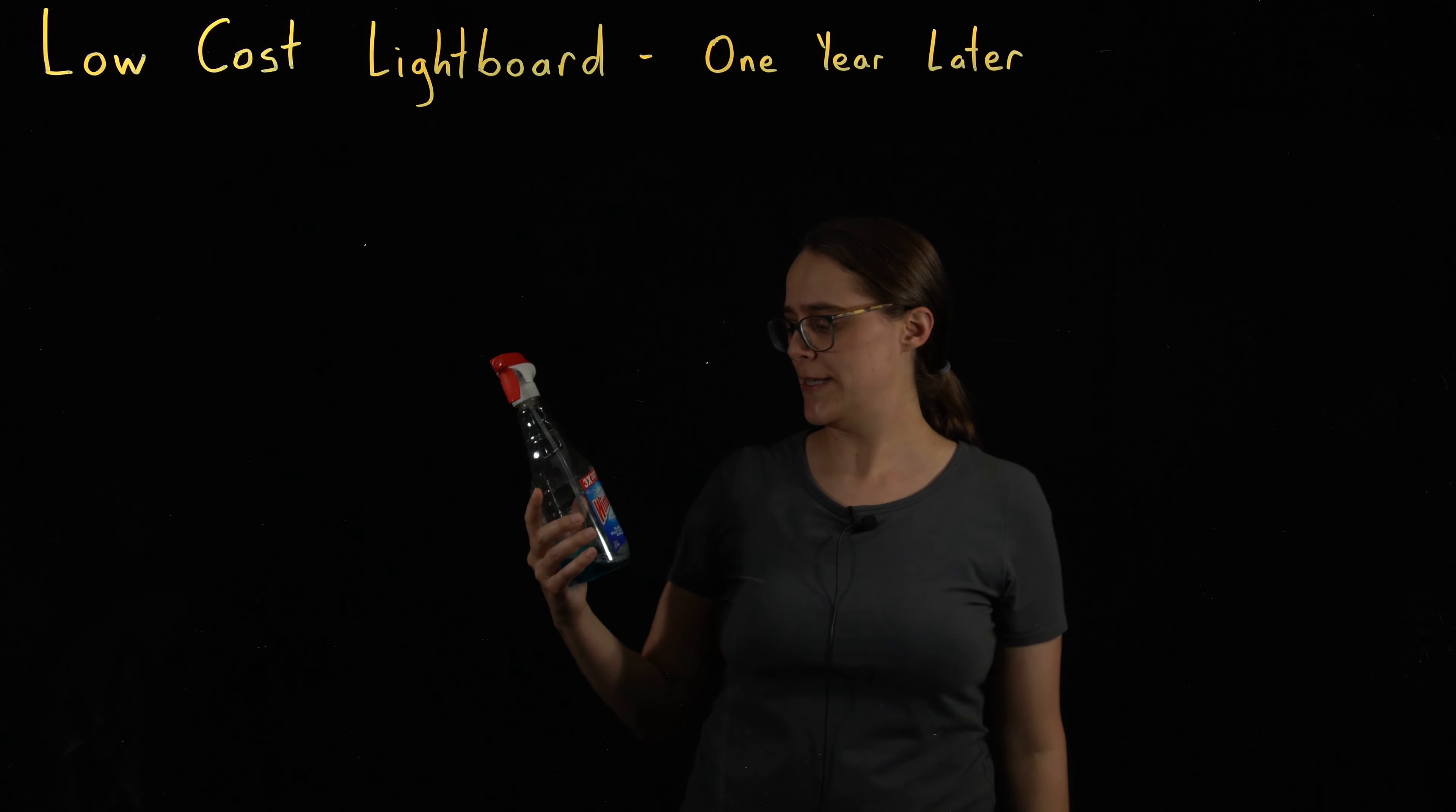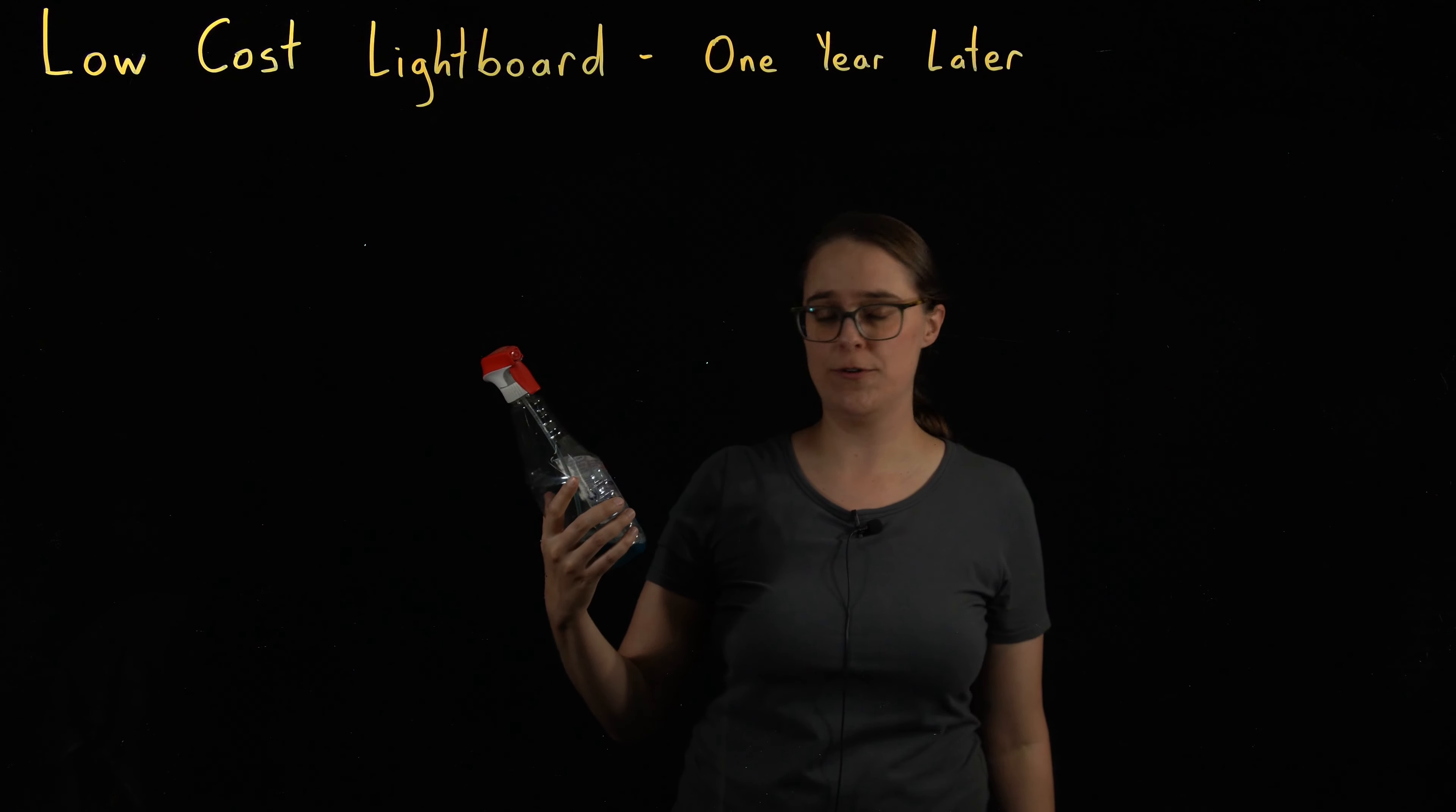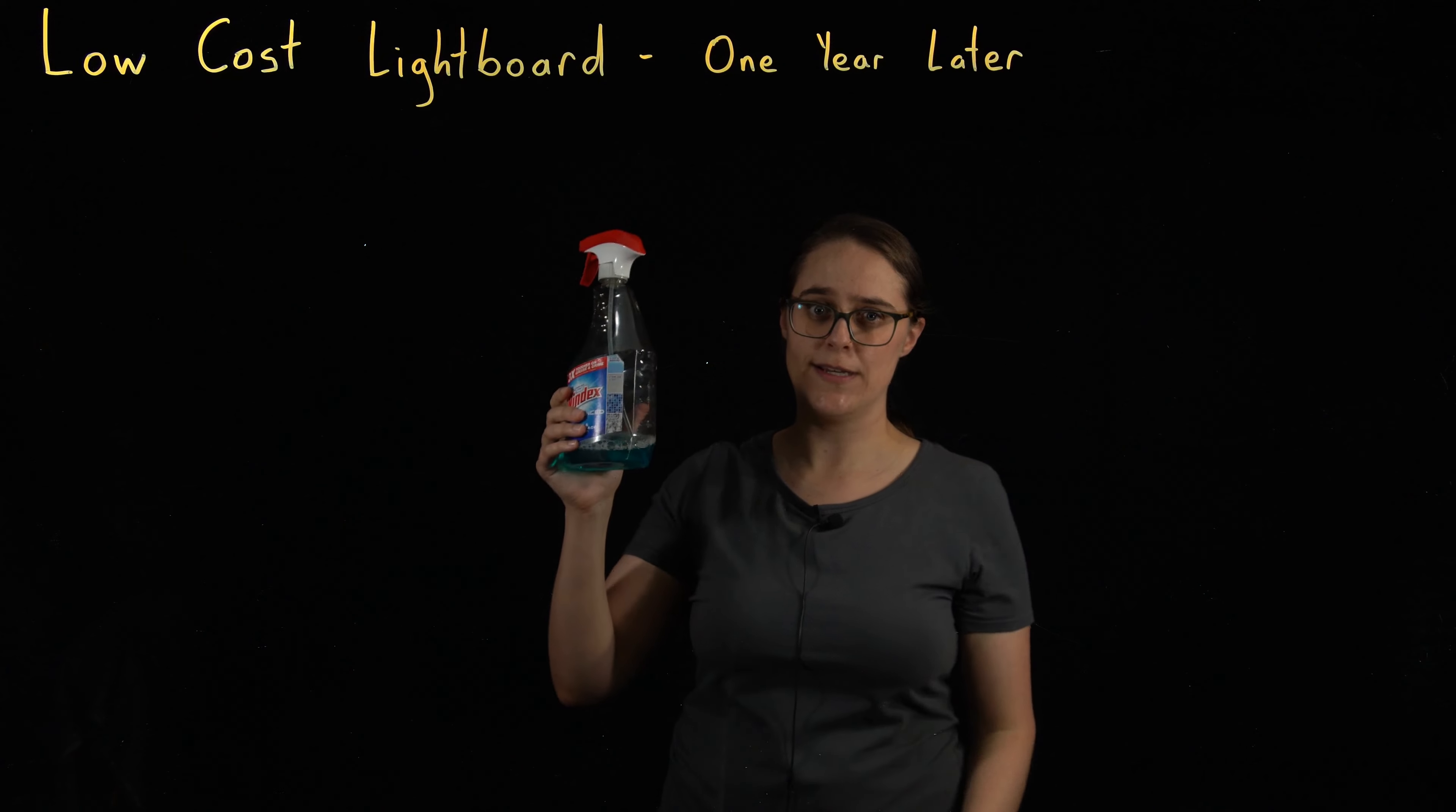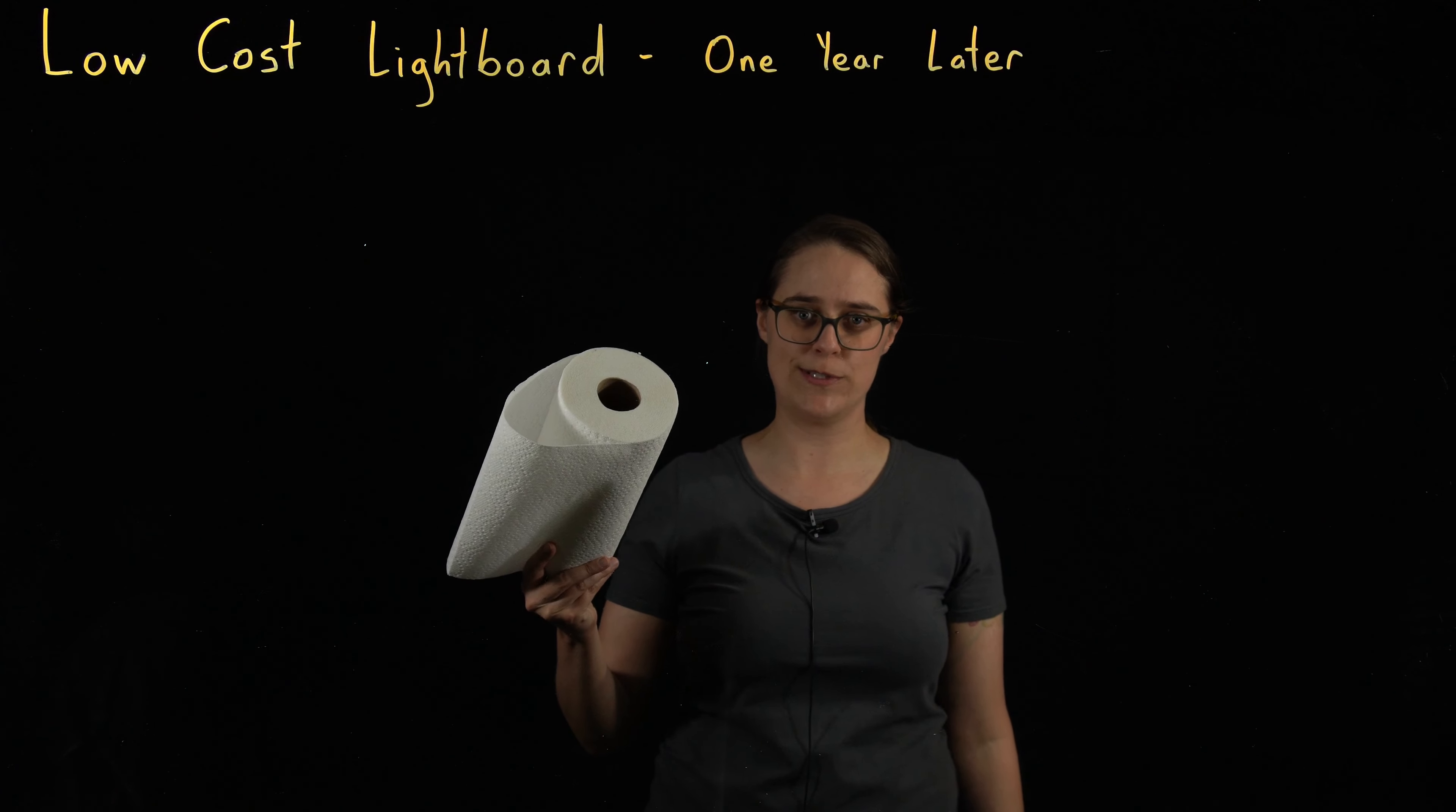Windex to clean the board. This bottle, when it was full, contained 32 fluid ounces, which is equal to 946 milliliters. This bottle is now mostly empty. I used most of this giant bottle of Windex. I also went through about three rolls of paper towels.